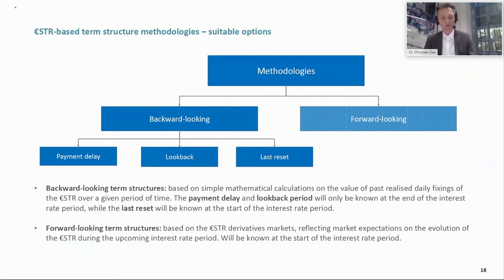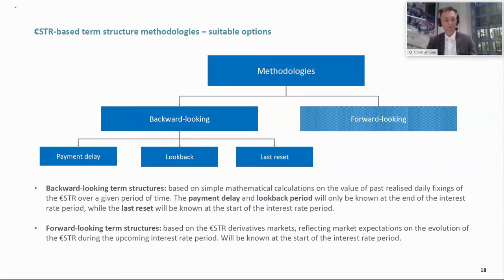Let's start with the term structure methodologies. We basically differentiate between backward-looking and forward-looking methodologies. In this presentation I will only look at those alternatives which we finally settled for, disregarding other alternatives the working group also considered. The backward-looking term structure: the base case is that we look at an observation period and an interest period that refer to the past, instead of the future as with EURIBOR today. The standard case would be that the observation period and interest coupon period are the same.